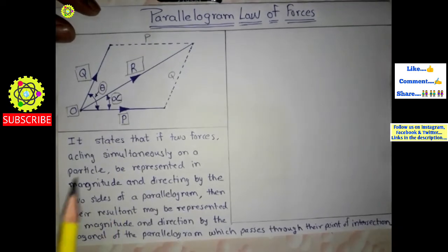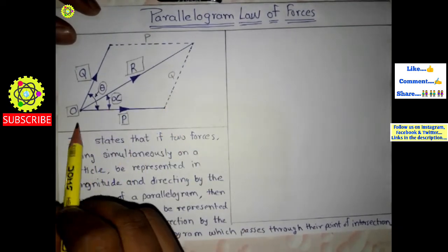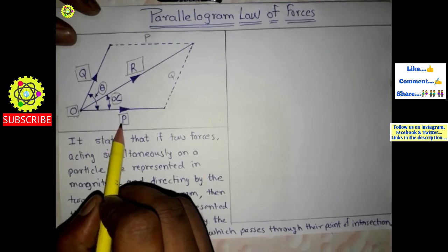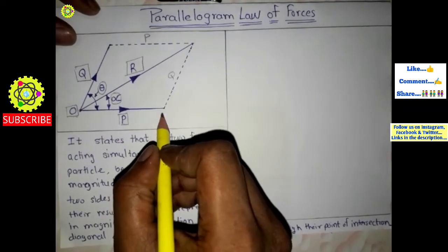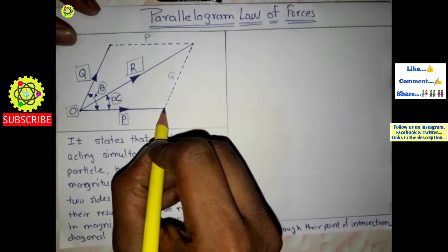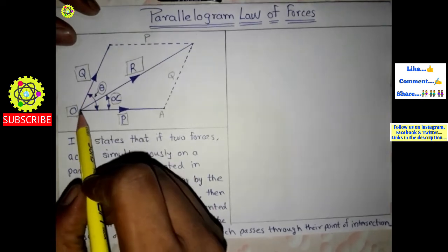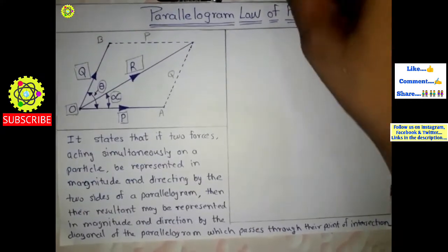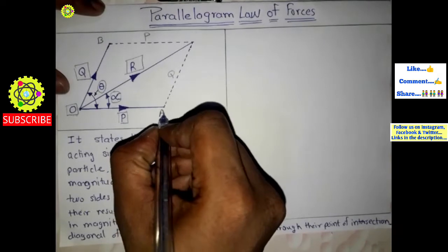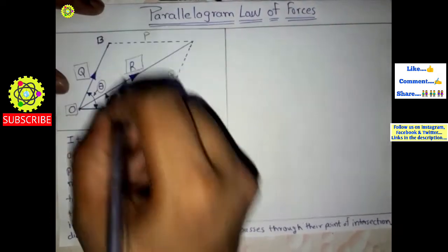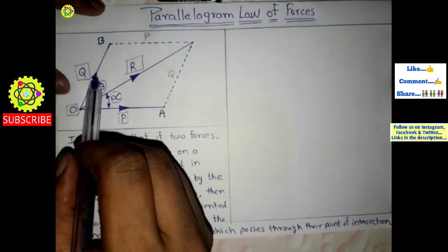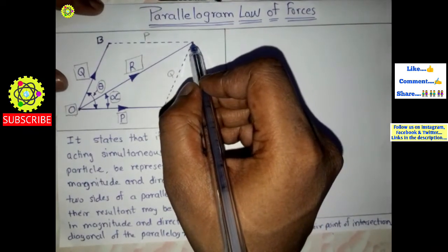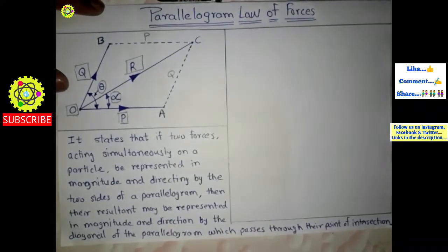Let's give names to the points. This particle is O. Force P is applied and we give this end of the parallelogram the name A. The second force Q is applied on particle O and we give this end the name B. We complete the parallelogram from these two forces and the closing point is given the name C.